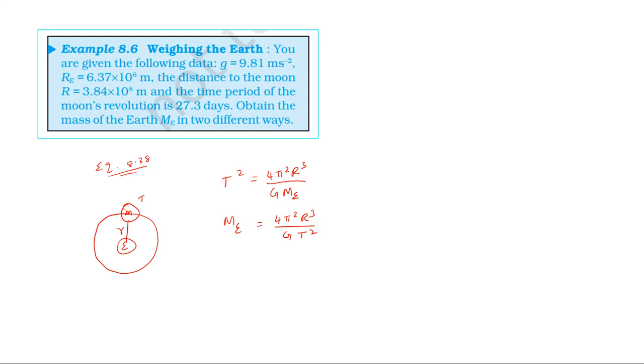First of all, the time period is 27.3 days. One day equals 24 hours, one hour equals 60 minutes, one minute equals 60 seconds. So 27.3 days equals 27.3 × 24 × 60 × 60 seconds.